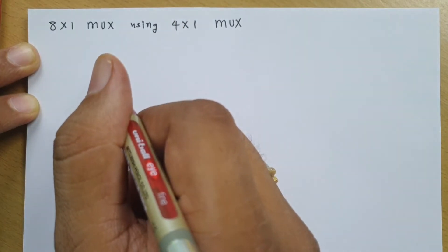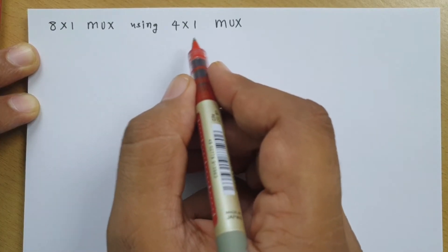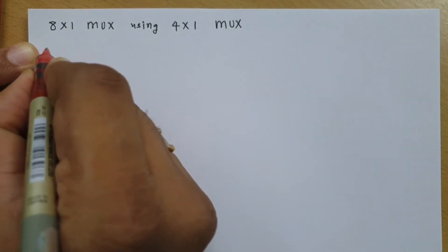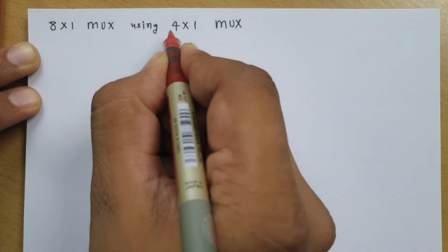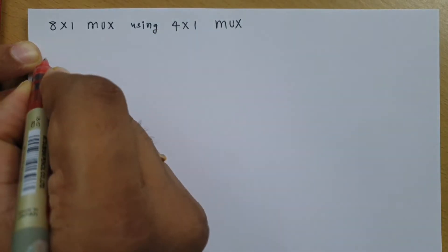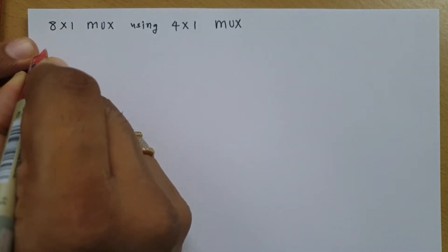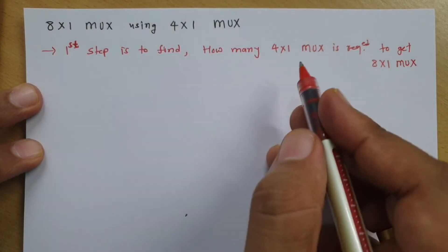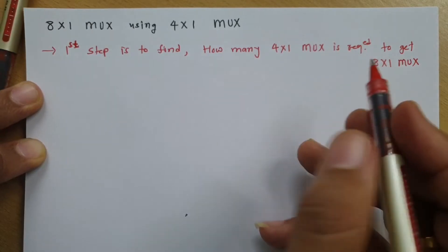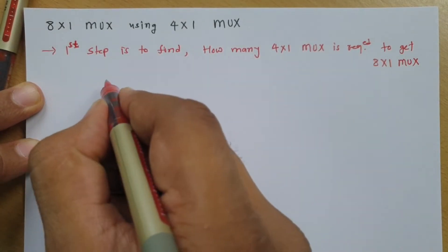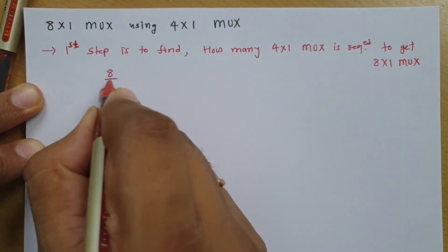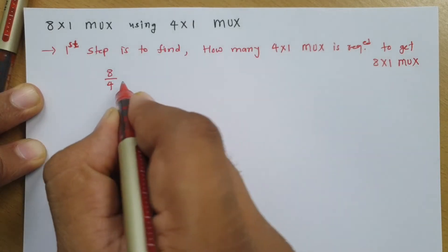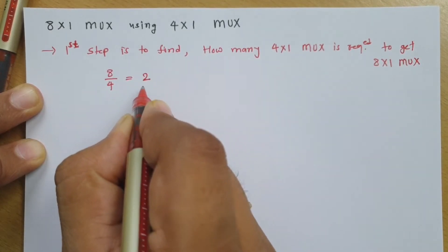The first step is to identify how many lower order mux are required to implement a higher order mux. So here, the first step is to identify how many 4x1 mux are required to get an 8x1 mux. To identify this, we need to divide the higher order mux by the lower order mux. Higher order is 8, lower order is 4, so that division is 2.